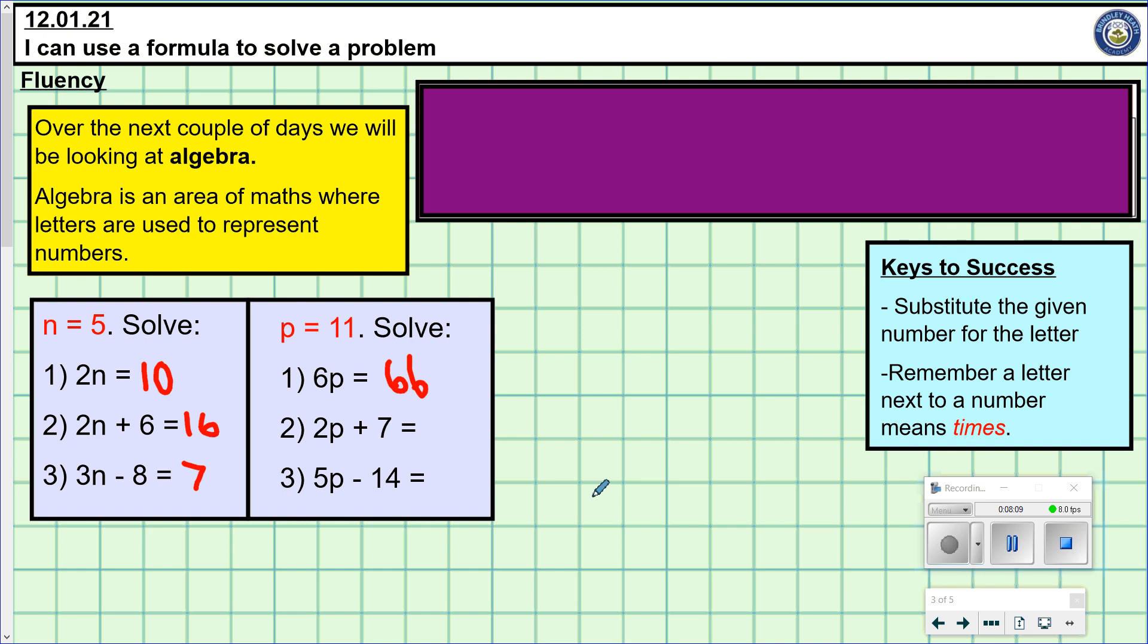Hopefully you've had a go. Question 2. 2p. So, 2 lots of 11. So, 2 lots of 11 is 22. Add my 7. Gives me the answer 29. Next, I've got 5 lots of p. Take away 14. Well, 5 lots of 11 is 55. Take away my 14. Should have given me 41.